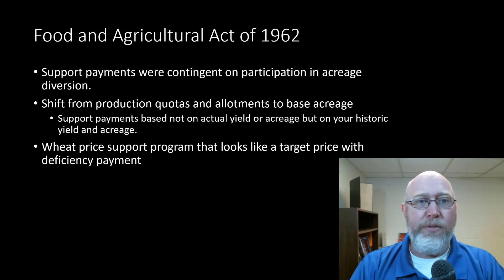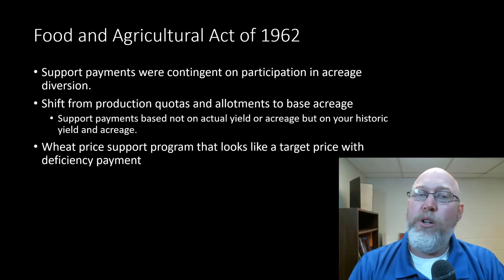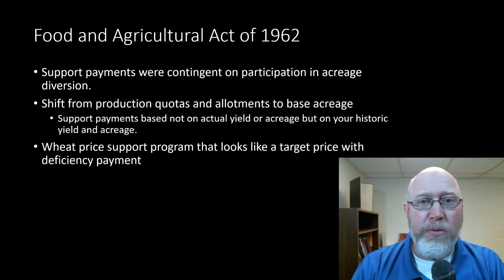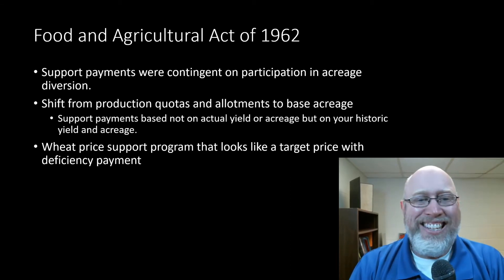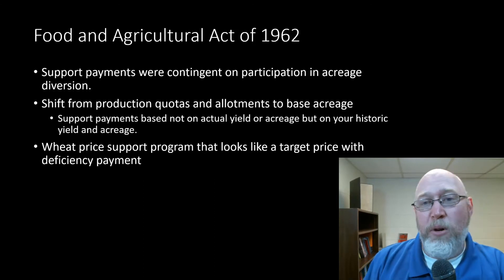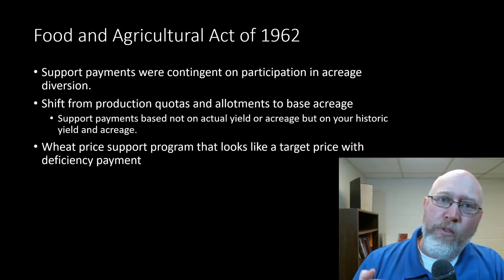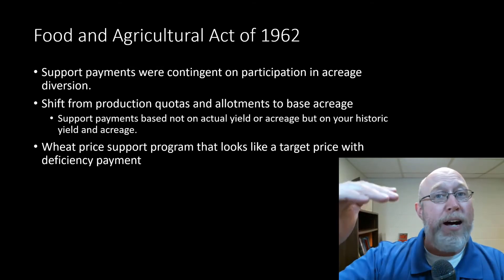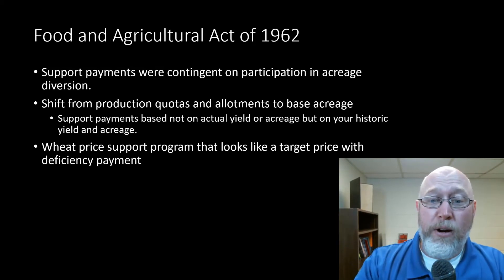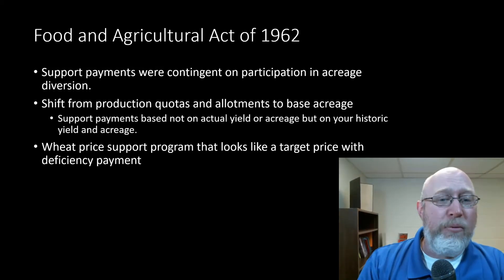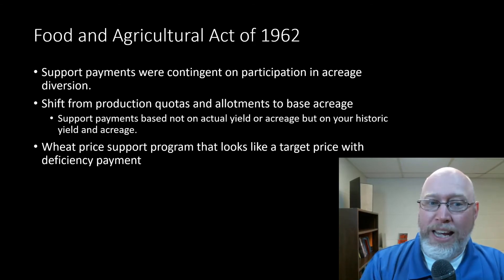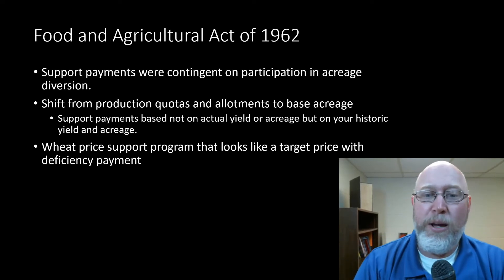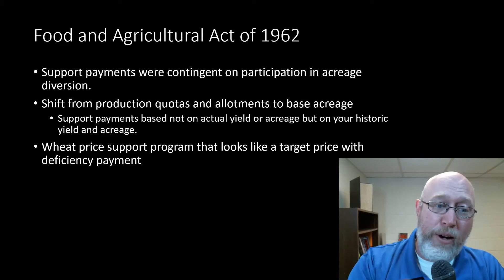In the Food and Ag Act of 1962, there was a new wheat price support program that looked a lot like what we would recognize as a target price with deficiency payment. This was testing the waters — the first time we tried to move from the old-style non-recourse marketing loan, where the CCC just buys up stockpiles and stores them indefinitely, to the idea of letting the farmer sell it and cutting them a check for the difference. That's a coupled direct payment — a target price with deficiency payment is a coupled direct payment.